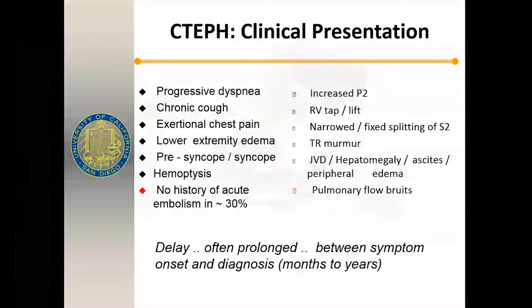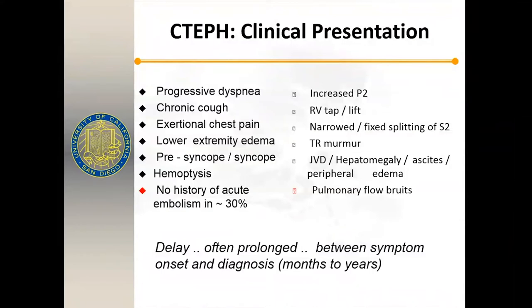How do these patients clinically present? Typically with progressive dyspnea, chronic cough, and chest pain on exertion — climbing stairs and complaining of chest pain. Lower extremity edema usually indicates right heart failure has developed. Pre-syncope and syncope occur because this is an obstructive lesion that limits cardiac outflow. Hemoptysis is seen frequently as patients develop bronchial collaterals — small, thin, high-pressure arteries that rupture and bleed. Importantly, there's no history of DVT or PE in up to 30% of patients.